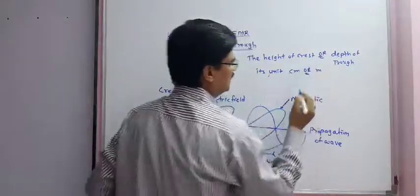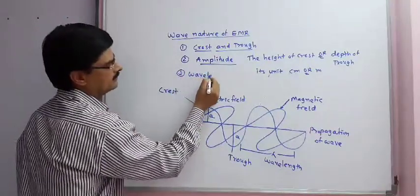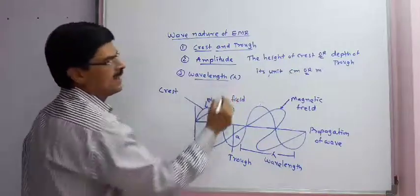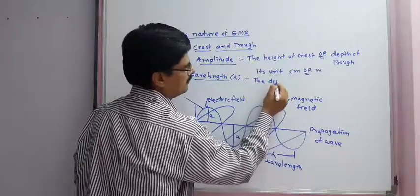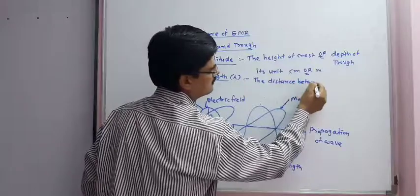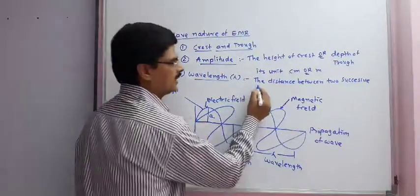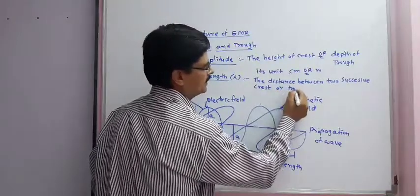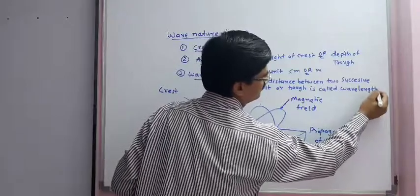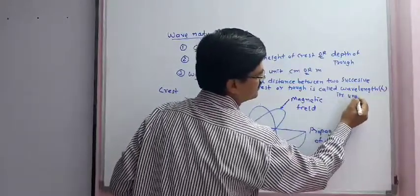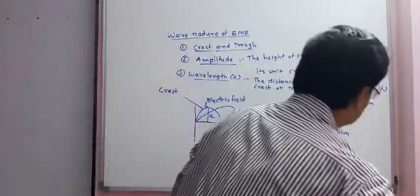Wavelength is denoted by lambda. The distance between two successive crests or troughs is called wavelength lambda, and its units are either cm or m. Another definition is frequency, denoted by nu.